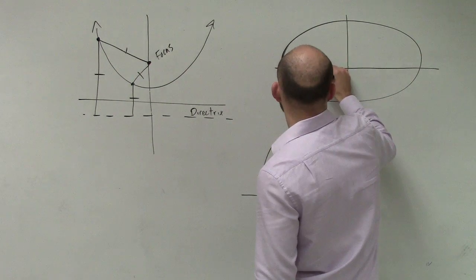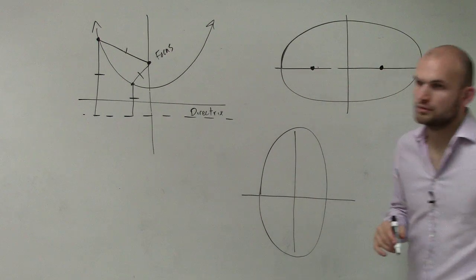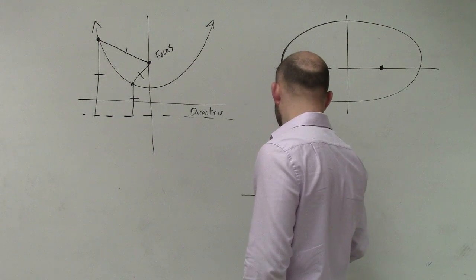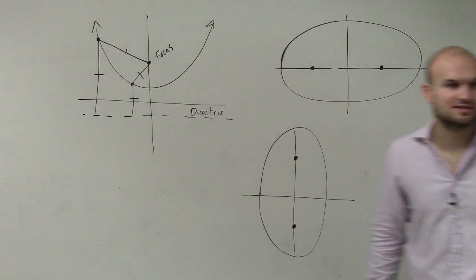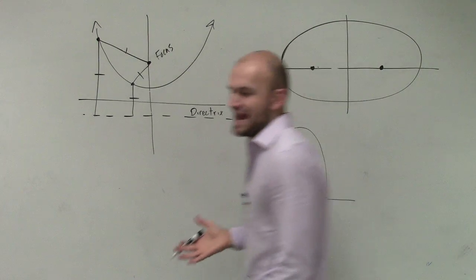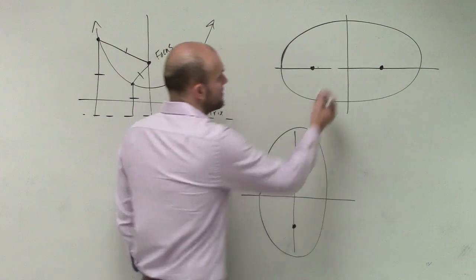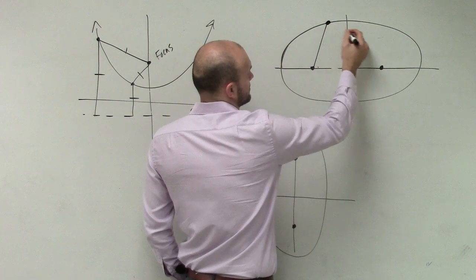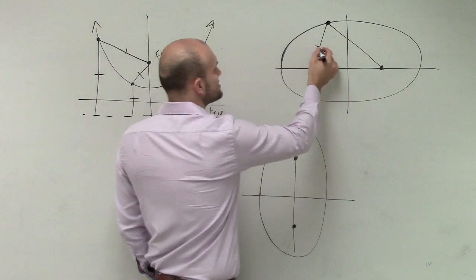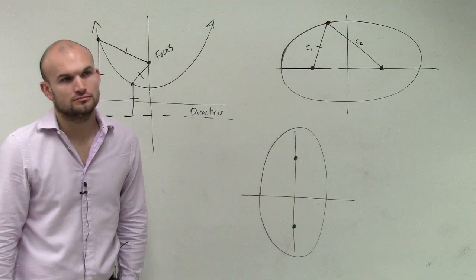Let's pretend our two foci are right here. What's so important about these foci is, obviously, we don't have a directrix anymore. So what is going to be our standard form of our ellipse? Well, the definition of an ellipse is, if I was going to pick any point on my ellipse and draw a line, let's call this c1 and this c2.